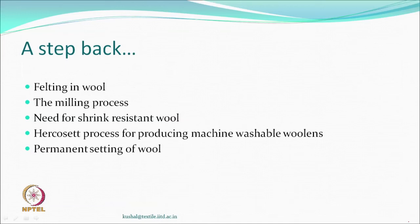Welcome to this class on textile finishing. Let us see what we did last time. We learned about felting, milling process, shrink-resistant wool, the Hercusset process, and also permanent setting of wool which can be done by using steam or creating new crosslinks between the molecules of wool or keratin, which we know is a protein.